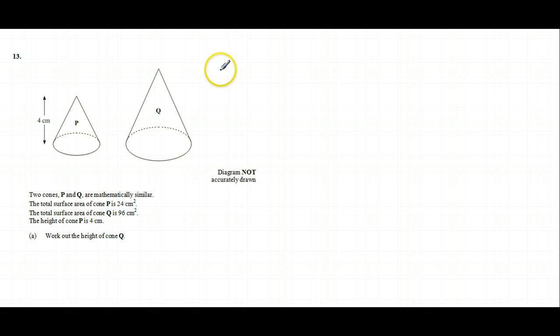The curved surface area of a cone is π times R times L, where L is the slanted length of the cone.